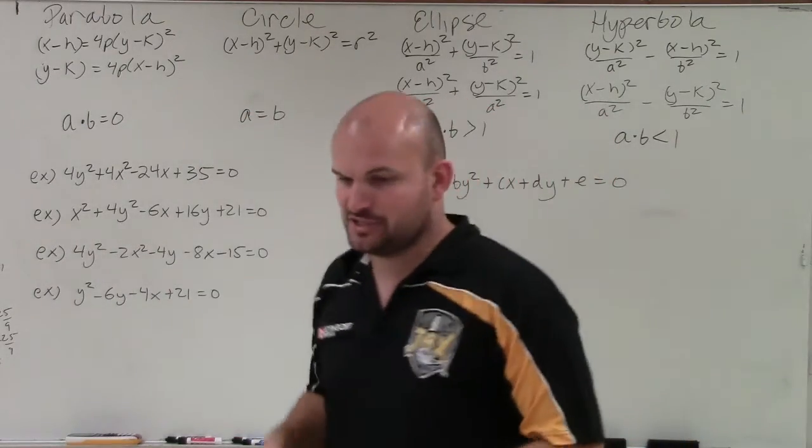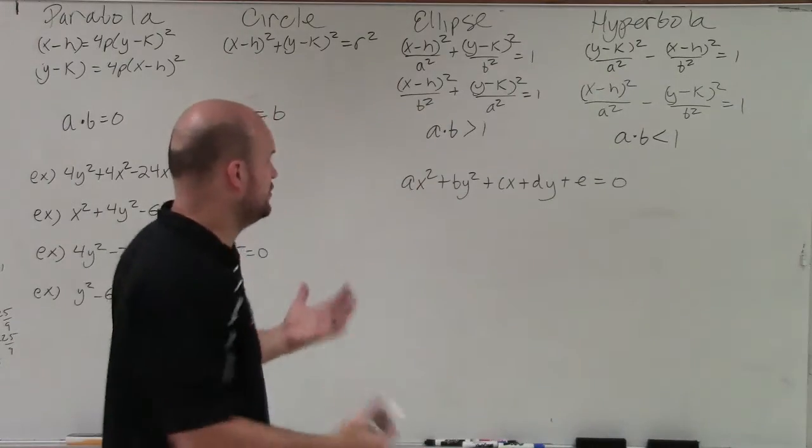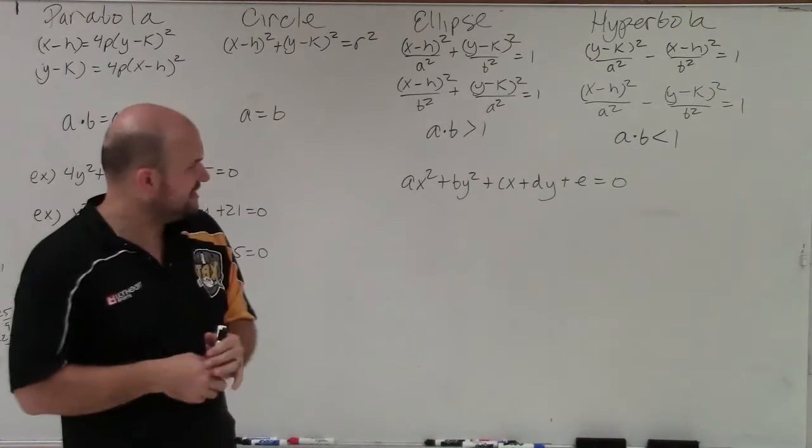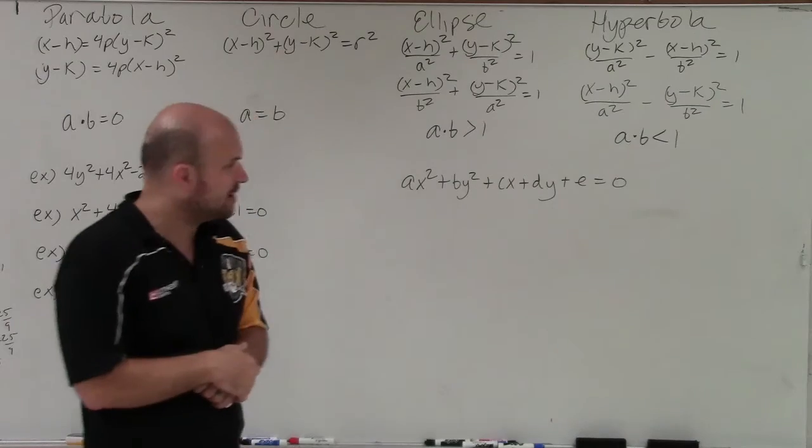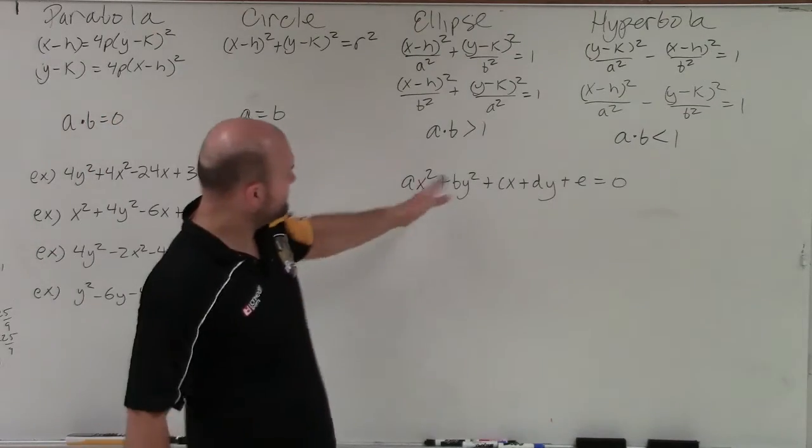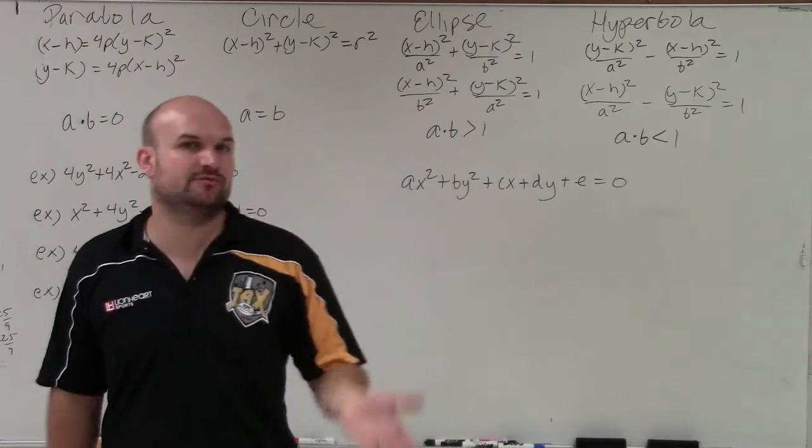And so what I did is I kind of took our general equation of a conic section: ax² plus by² plus cx plus dy plus e, where a, b, c, d, and e are all going to be real numbers.